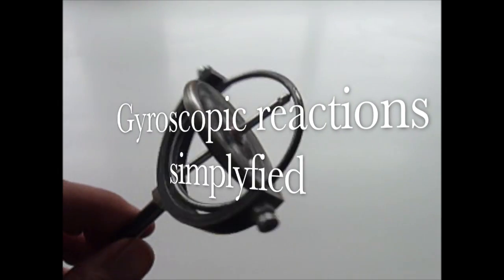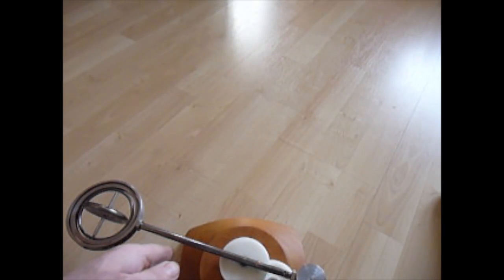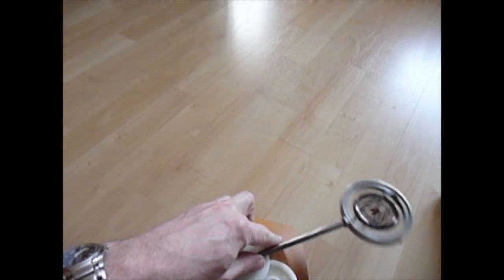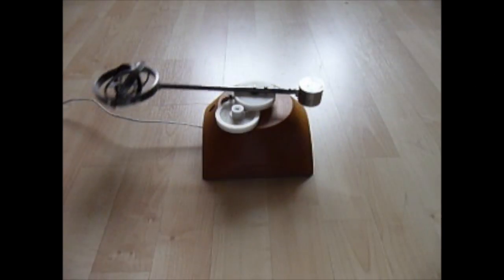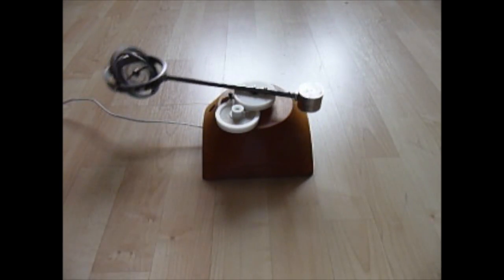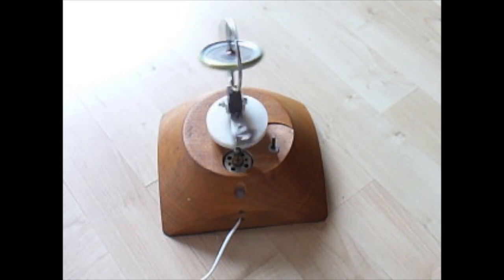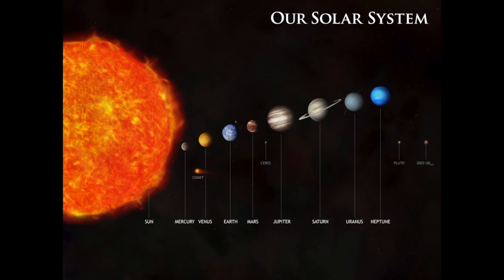This video shows a simple visual method of understanding the curious actions known as gyroscopic precession or gyroscopic effect. Easily seen with simple gyros, it affects helicopters, planes, can be seen in anti-gravity experiments and probably even the planets.